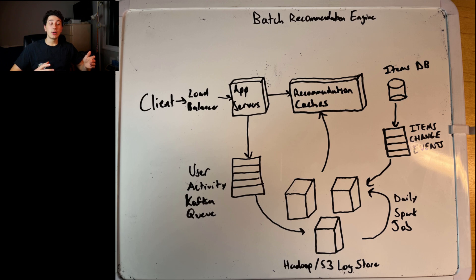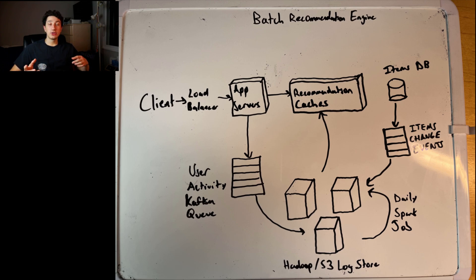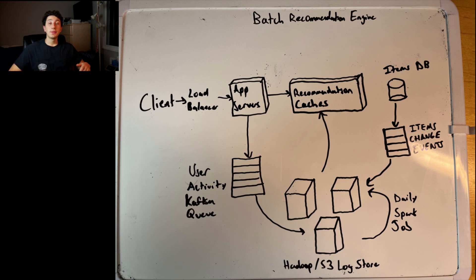What that means is we can ingest all the new items, and every single day we take in our user data, item data, and existing model. We can run a once-per-day Spark job that populates a cache with all the recommendations we want. Every time a user clicks one of our suggestions — or doesn't — we can throw that into a Kafka queue and ingest it back into our Hadoop cluster, so the following day we can account for that information, update our model, and make new predictions. This is really nice because it doesn't have many availability requirements and is easy to manage.